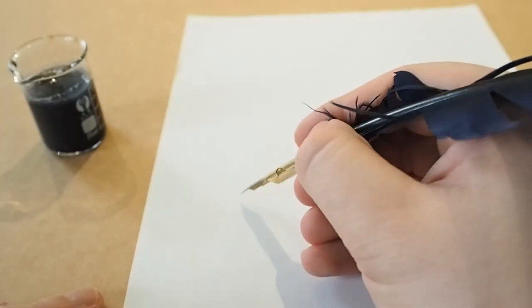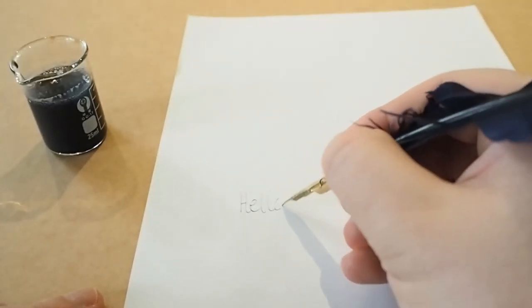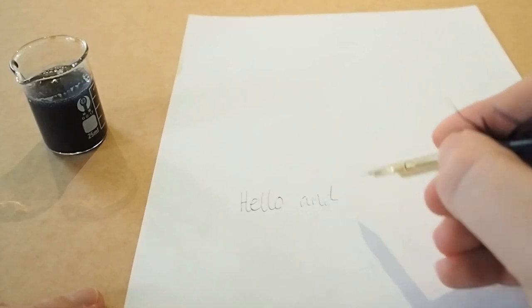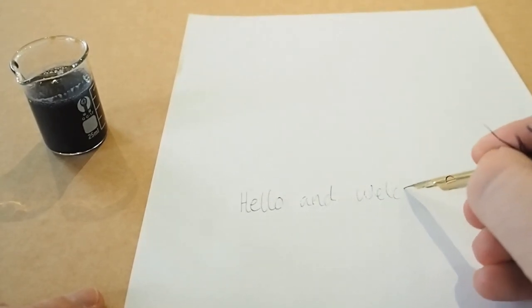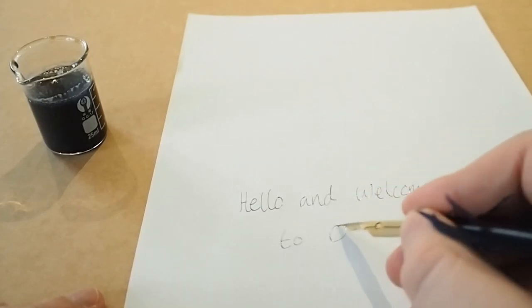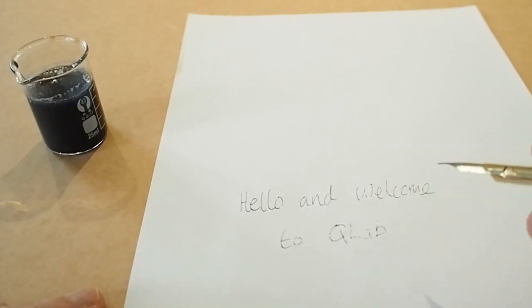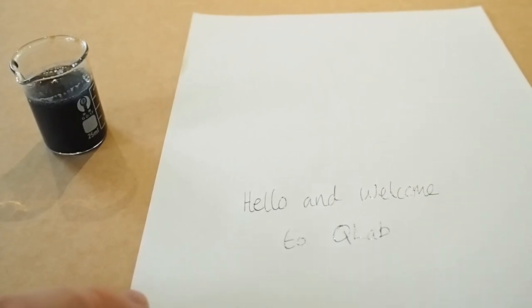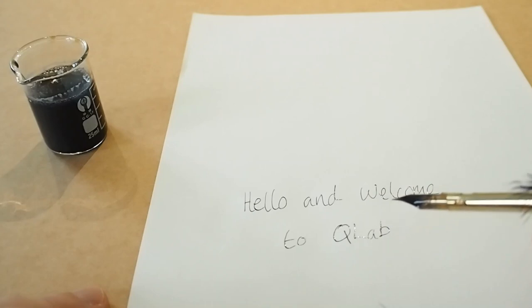Let's have a go writing with this. You may notice that it doesn't look terribly clear to begin with, and that's because as we lay down the ink, the ink actually forms on the page. Because as the iron tannic reacts with air, it forms an insoluble complex, something that won't dissolve in water.